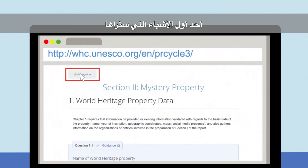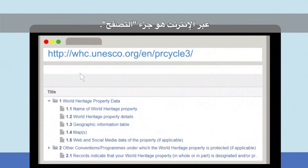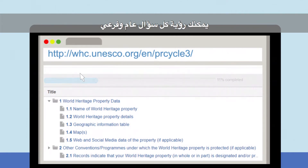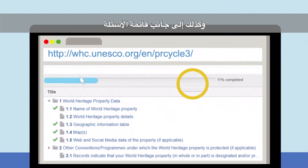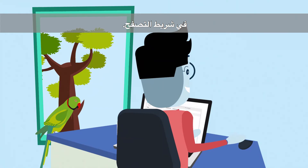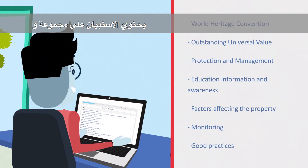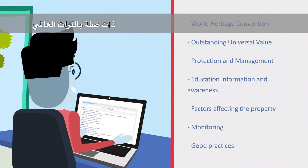One of the first things you'll see when you access the online questionnaire is the navigation pane. The list is extendable so that you see each question and sub-question contained in the 15 chapters. As you work your way through the questionnaire, you can see your progress on the top progress bar, but also along the list of questions in the navigation bar.